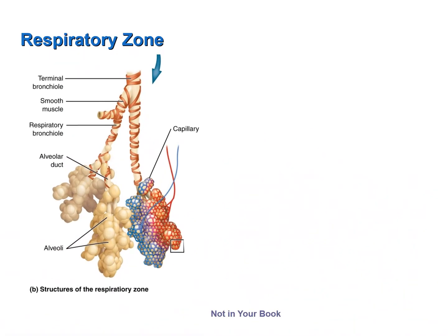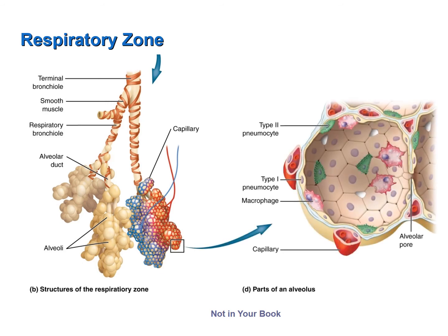Now let's focus on an alveolus. Alveoli are connected to one another by alveolar pores. The walls of an alveolus consist of two types of cells. Some of these cells — the ones shown in green — produce a surfactant which prevents the alveoli and the lungs as a whole from collapsing when we exhale. Also notice that there are macrophages — white blood cells that gobble up any bacteria, viruses, or particulate matter that makes it to the alveoli.